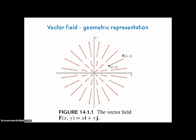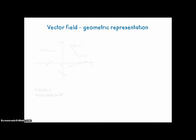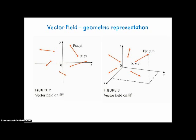Vector field geometric representation. Here's a two-dimensional example of the vector field f(x,y) = xi + yj. Notice that at each point there's a vector whose length would be the square root of x squared plus y squared. Here's another two-dimensional example — a generic vector field with just a few little vectors shown instead of infinitely many. R-squared is another name for 2D. Here's a picture in three dimensions, and another name for three dimensions is R-cubed.